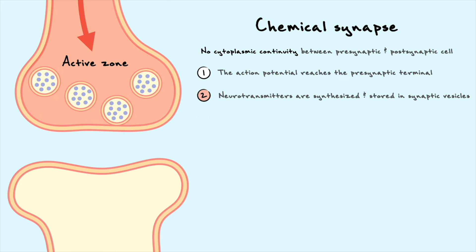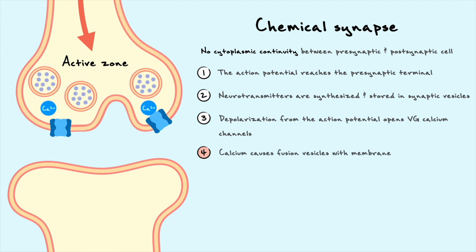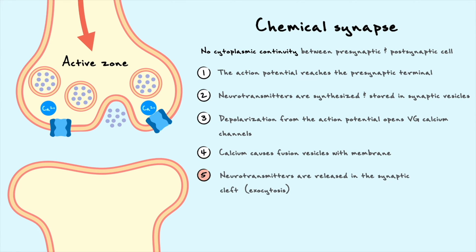The depolarization carried by the action potential opens voltage-gated calcium channels. Because of the steep calcium concentration gradient, when the channels open, calcium rapidly enters the active zone. The entry of calcium causes the fusion of the vesicles with the membrane and the subsequent release of neurotransmitters into the synaptic cleft — a process also referred to as exocytosis.